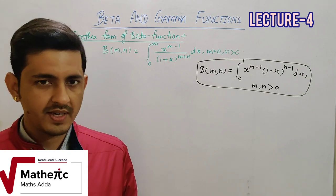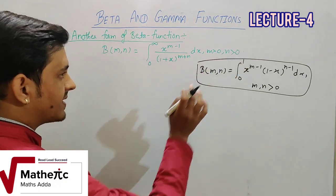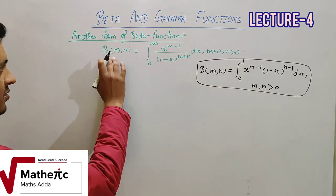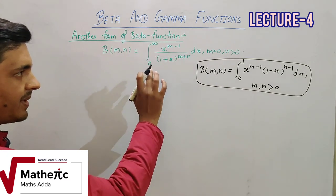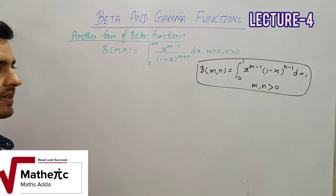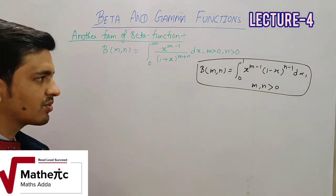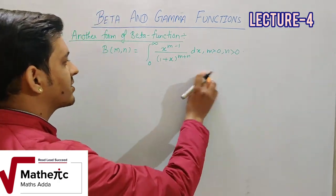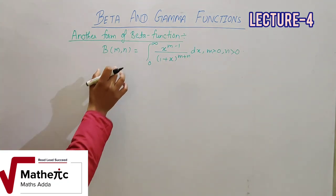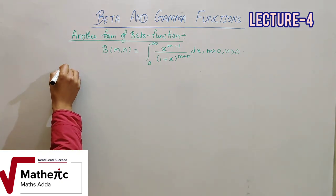आज का जो वीडियो है वो काफी important वीडियो है। अभी हमने जो beta function की form पड़ी थी वो 0 से 1 integration की थी। अब हम beta function की दूसरी form पढ़ने जा रहे हैं: Beta(m,n) = ∫₀^∞ x^(m-1)/(1+x)^(m+n) dx। Beta function की properties भी हम पढ़ चुके हैं — beta function is a symmetric function, और factorial terms में formula। इस formula का आज हम proof करेंगे और कुछ numericals भी देखेंगे।